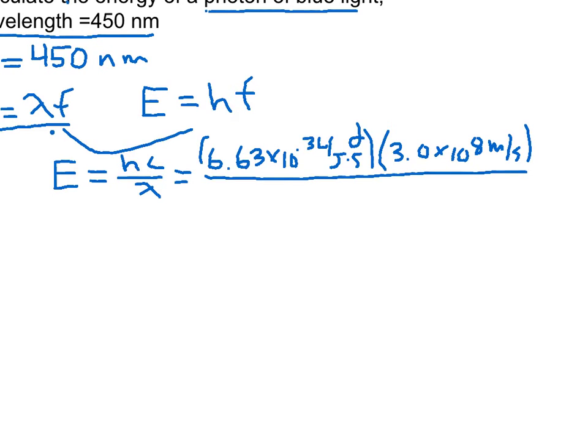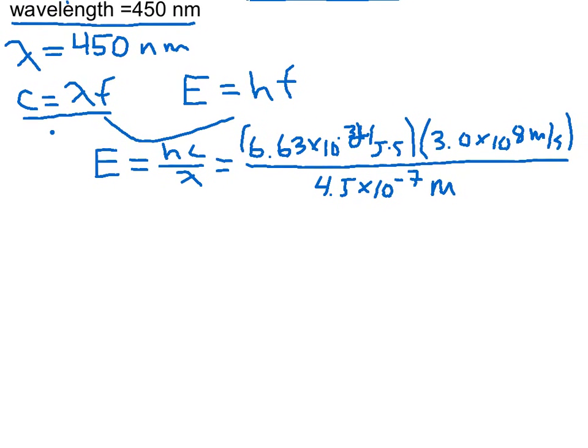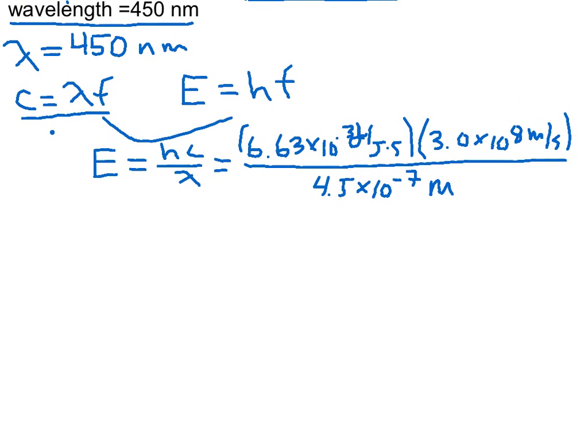And that's all over the wavelength, which is 4.5 times 10 to the minus 7th meters. Remember, things have to be in meters in order to get them to work out properly. And when we solve that for the energy, E is equal to 4.4 times 10 to the negative 19th joules.